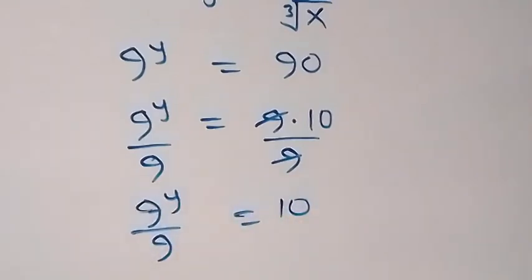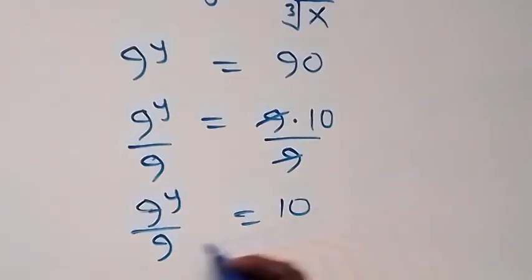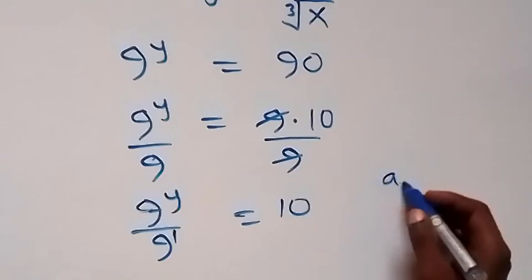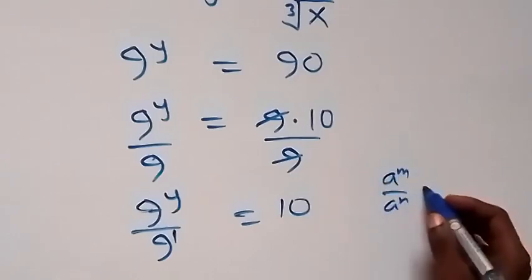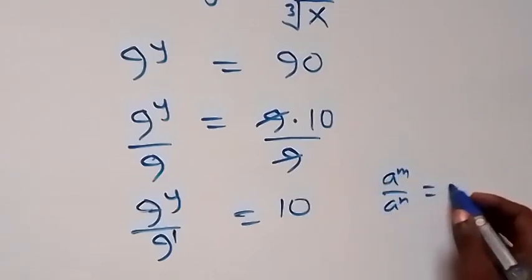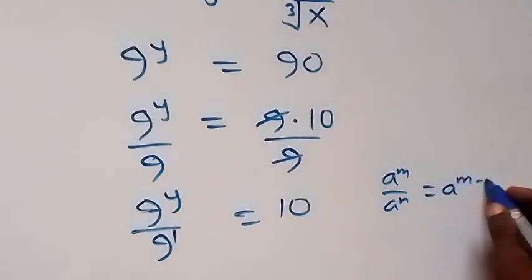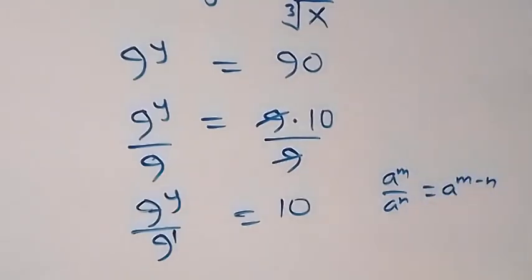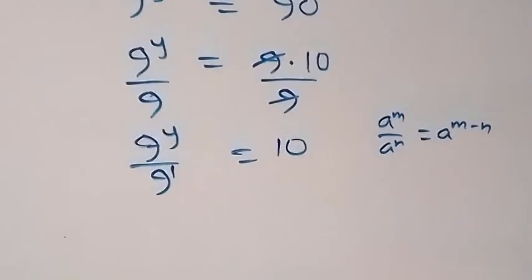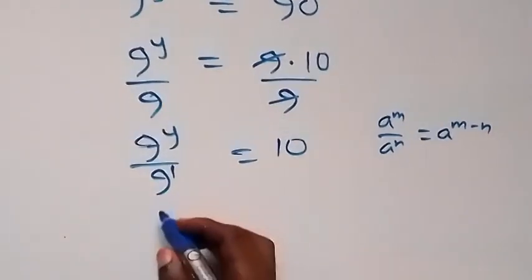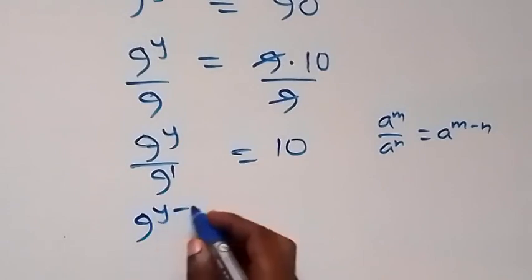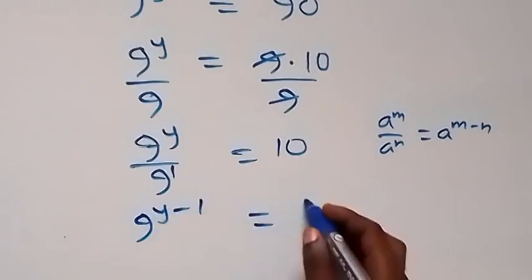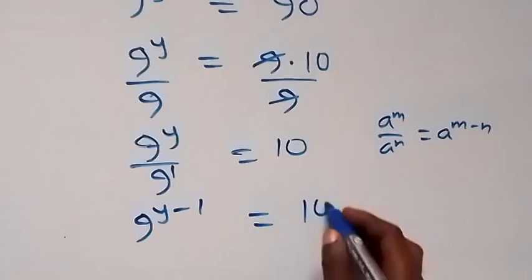Applying the law of indices, this also means 9 raised to power 1. When we have 8 raised to power n over 8 raised to power n, it equals 8 raised to power n minus n. So from here, this becomes 9 raised to power y minus 1 equals 10.